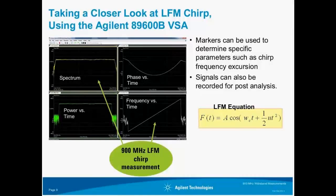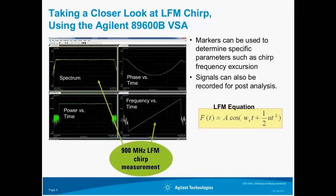Here we show four measurements of an LFM radar signal, starting in the upper left and going clockwise. In addition to being able to measure the pulse spectrum, we can also measure the power envelope of a single pulse on the bottom left, and the phase terms of our LFM equation on the right. The one-half UT squared term is measured on the top right as phase versus time, and the derivative of the phase term is measured on the bottom right as frequency versus time. U is the LFM slope, and is the bandwidth of the chirp divided by the pulse width.